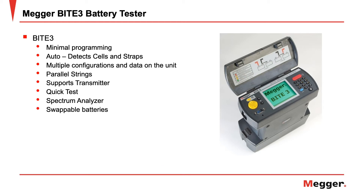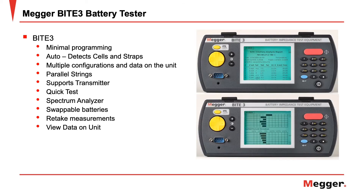The Byte 3 has hot-swappable batteries — you can replace them in the middle of a test and pick up where you left off, so you'll never lose data. The Byte 3 also allows you to easily retake cell and strap measurements and view the string data on the unit. You can see all the cell and strap measurements for the entire string, as well as the cell data displayed as a simple bar chart. Easily view all the data on the spot and perform any required troubleshooting and retesting, so there's no need for additional trips.